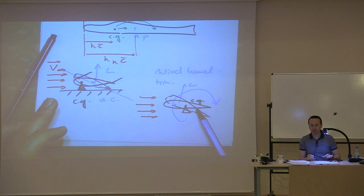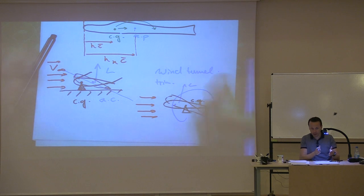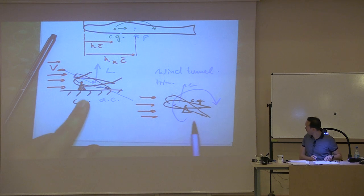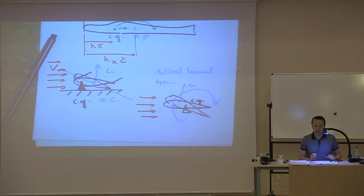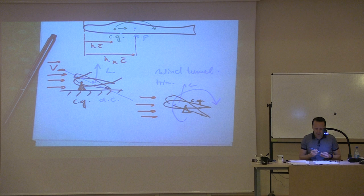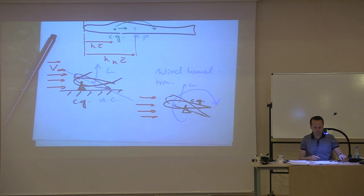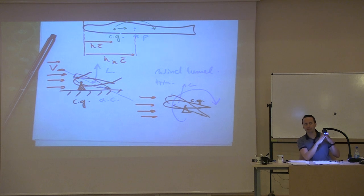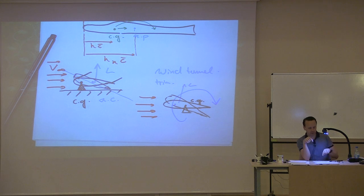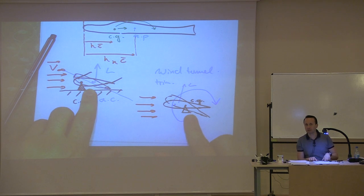It is the same concept as what we found from the equations: the CG must be in the front. And therefore the neutral point of the airplane is sometimes called the aerodynamic center of the aircraft, because it acts like an aerodynamic center.